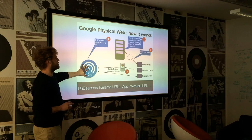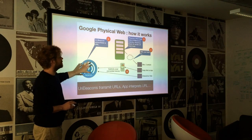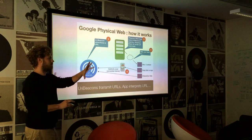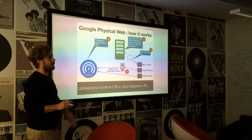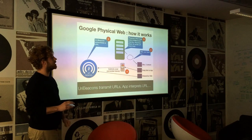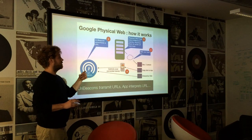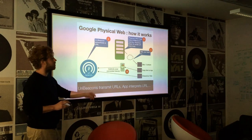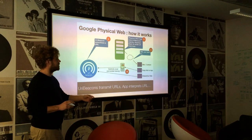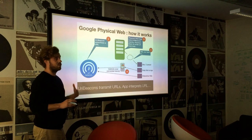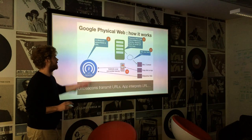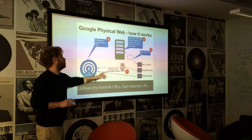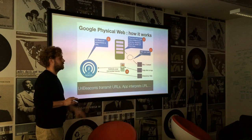The way it works is you have the URL beacon, and that advertises the URL for your service. Your physical web app then scans for beacons and finds the URLs. It then sends them to a server which resolves them for you, displays them to you, and you click on it and get a landing page. After that you can interact with either the beacon and device or see the information.